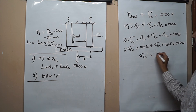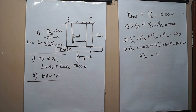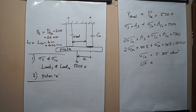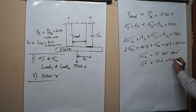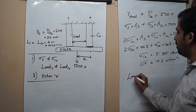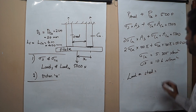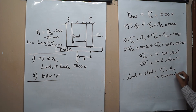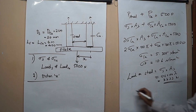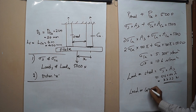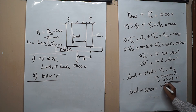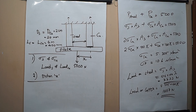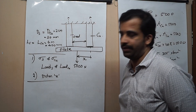Solving this gives sigma_copper ≈ 5.305 N/mm², and sigma_steel = 2 × 5.305 = 10.6 N/mm². For the load on steel: load_steel = sigma_steel × area_steel = 10.6 × 100π ≈ 3333 Newton. For the load on copper: load_copper = sigma_copper × area_copper = 5.305 × 100π ≈ 1667 Newton. These loads act as reactions in the upward direction.